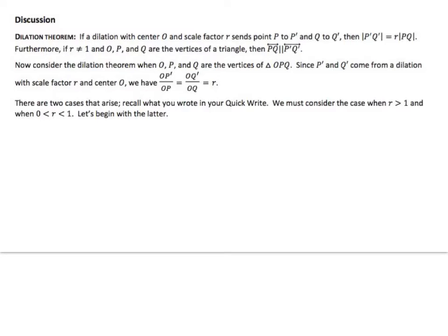A little discussion. Dilation theorem. If a dilation with center O and scale factor R sends P to P prime and Q to Q prime, then the absolute value, so the distance P prime Q prime is equal to the scale factor times the absolute value of PQ, which is the distance PQ. We say if that's P to Q, the measurement has to be the absolute value, because we don't have negative measurements.